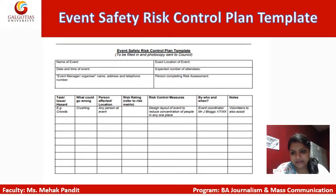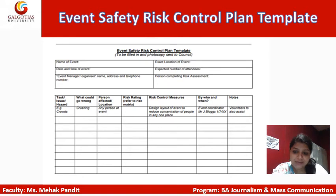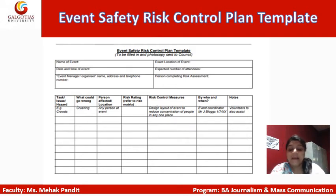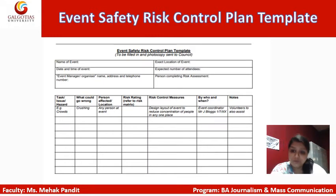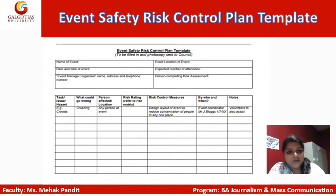After analyzing the type of risk, the level of risk, and the number of risks involved in your particular event, the event safety risk control plan template — which you can see on your screen — is used by the team to fill in during the planning process, that is, in the pre-planning stage.